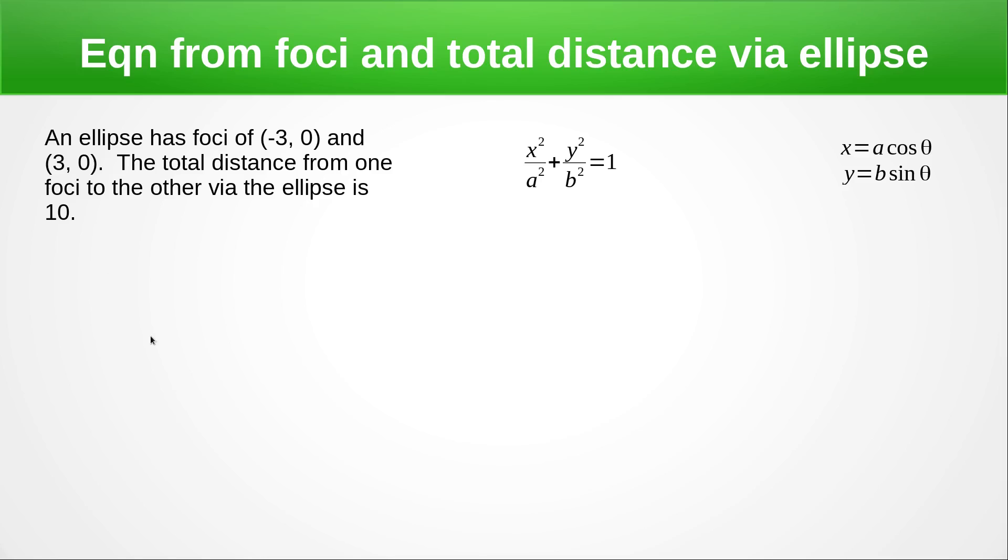Now that total distance from one foci out to the ellipse and back happens to be the same as the major axes. And you can check that for yourself and verify it. It's not too difficult to do. So we've got the centre at 0, 0. The distance from 0, 0 to the foci is 3. So we've got C is 3. So A is half that total distance, just like we've said. So that means A equals 5.